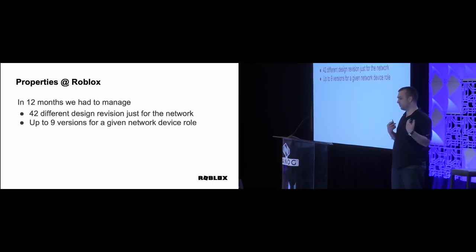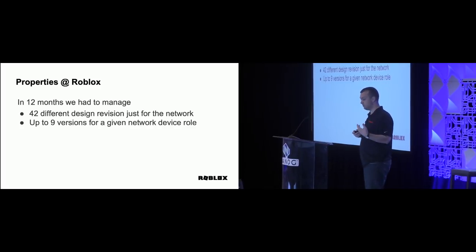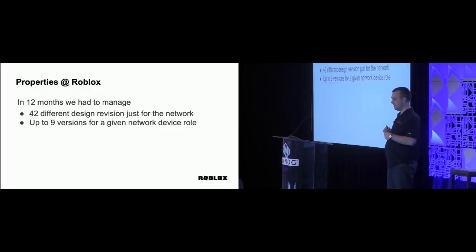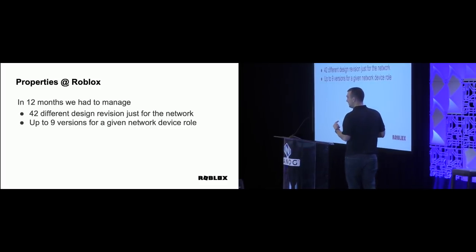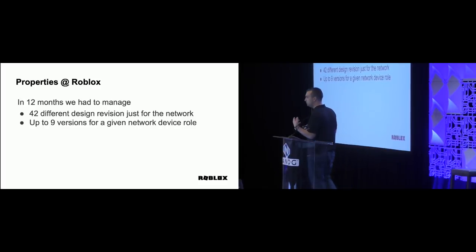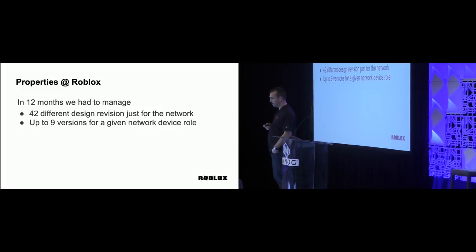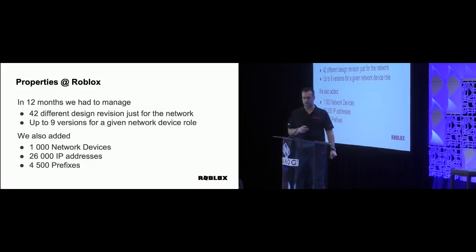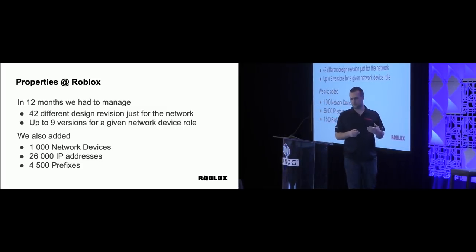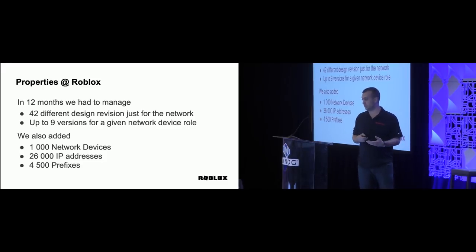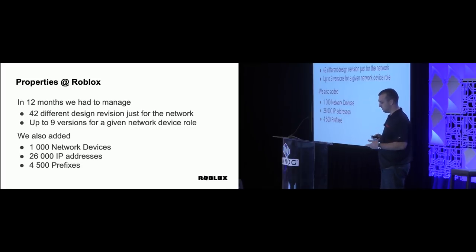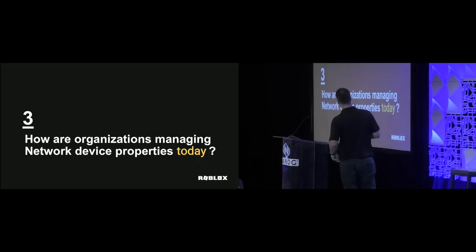Just to give you some numbers of what we had to deal with this year at Roblox — we probably went a little faster than most because we had very aggressive goals. But in 12 months we had to manage 42 different revisions of our design and device properties. For one of our device management switches, we had to manage nine different versions, because we wanted to reuse a lot of hardware and had to manage three different sets of hardware with different architectures. So just one role went up to nine different versions. Beyond about 10 devices, I will not want to manage anything manually.